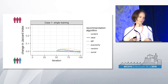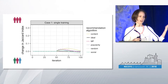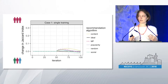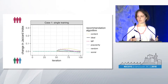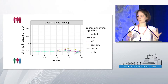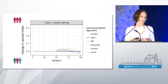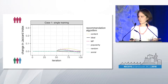We looked at two cases. In the single training case, the y-axis is the change in Jaccard index with zero being the ideal homogenization, higher being more homogenous, lower being more heterogeneous. We exposed users to random items for 50 iterations, trained all the different recommendation algorithms, then deployed them and let the simulations run with that single training instance. Here, all systems stay pretty close to the ideal level of homogenization.